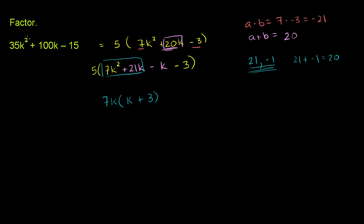And then we can look at this group right here. We can factor out a negative 1. So this is equal to negative 1 times k plus 3. And of course, we have this 5 sitting out there the whole time.